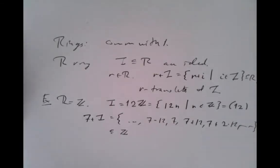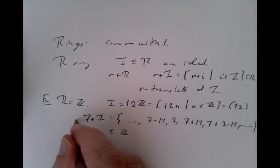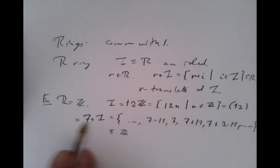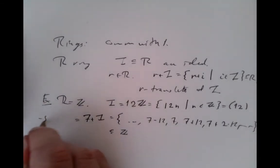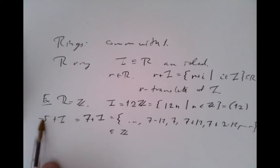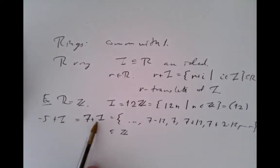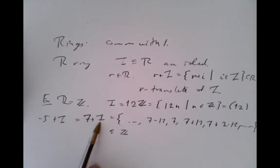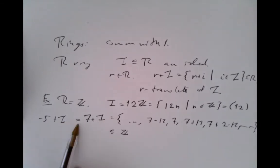Note that we could also write exactly this set as minus 5 plus I, because I is the multiples of 12, and if you take 5 away from a multiple of 12 you always get 7 plus a multiple of 12, and vice versa. So those are the same sets.